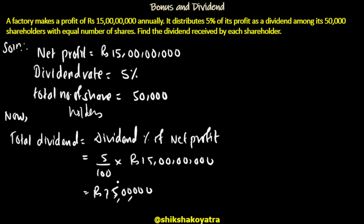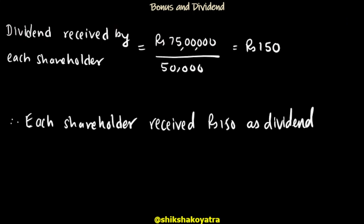That gives 75 lakh total dividend. Now divide among 50,000 shareholders — so each shareholder receives their portion. Dividend received by each shareholder = total dividend divided by total number of shareholders. That gives 150 rupees.